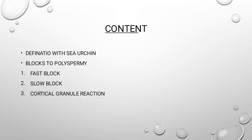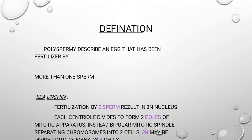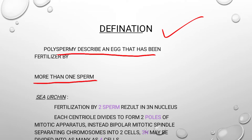First of all we will discuss the definition of polyspermy. Polyspermy describes an egg that has been fertilized by more than one sperm. As the name shows, 'poly' means many and 'spermy' means sperm — when many sperms come and fertilize one egg, this process is called polyspermy.